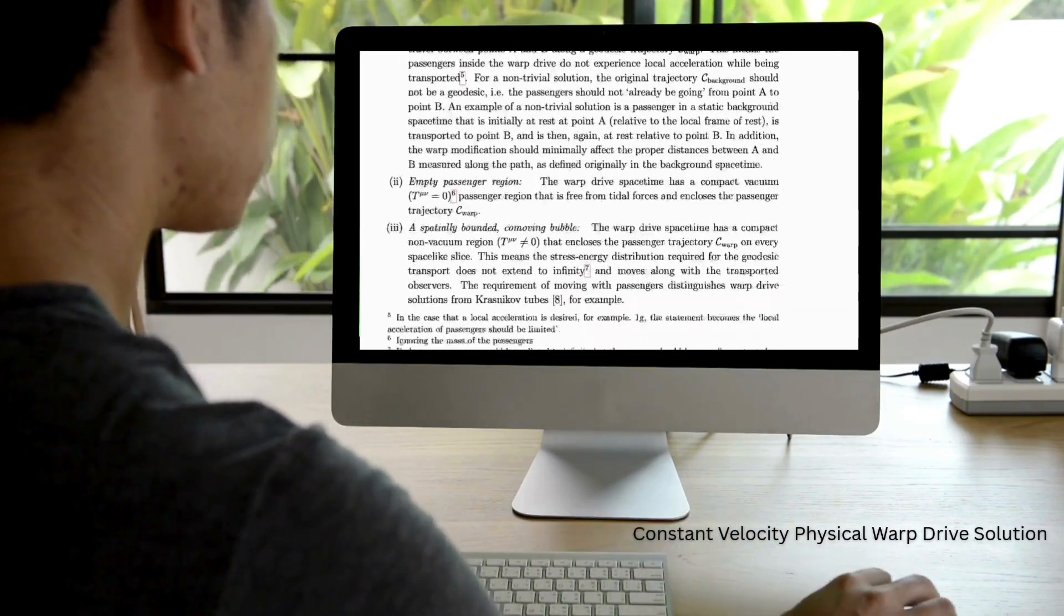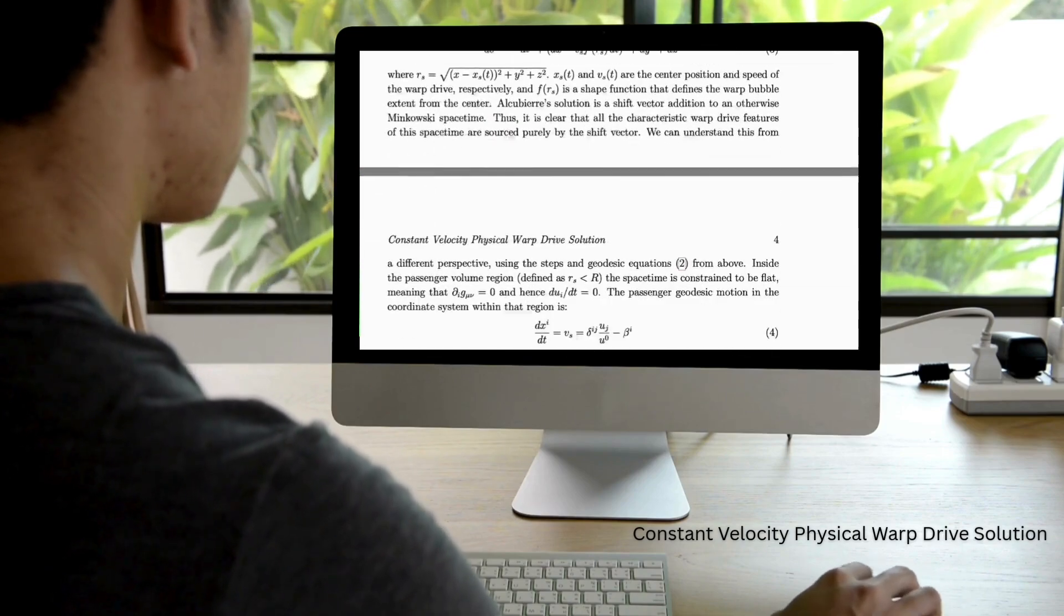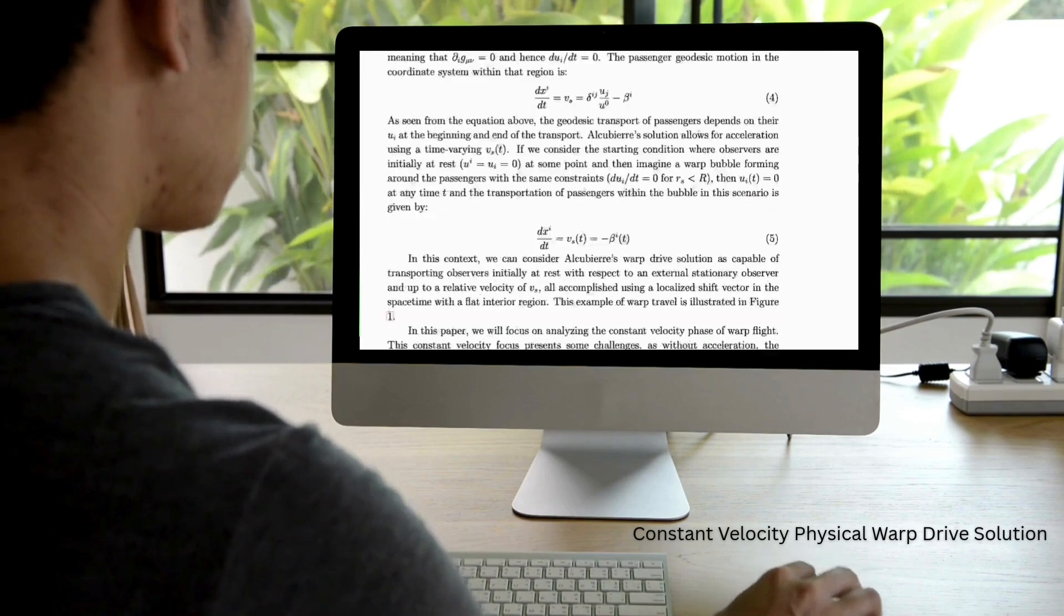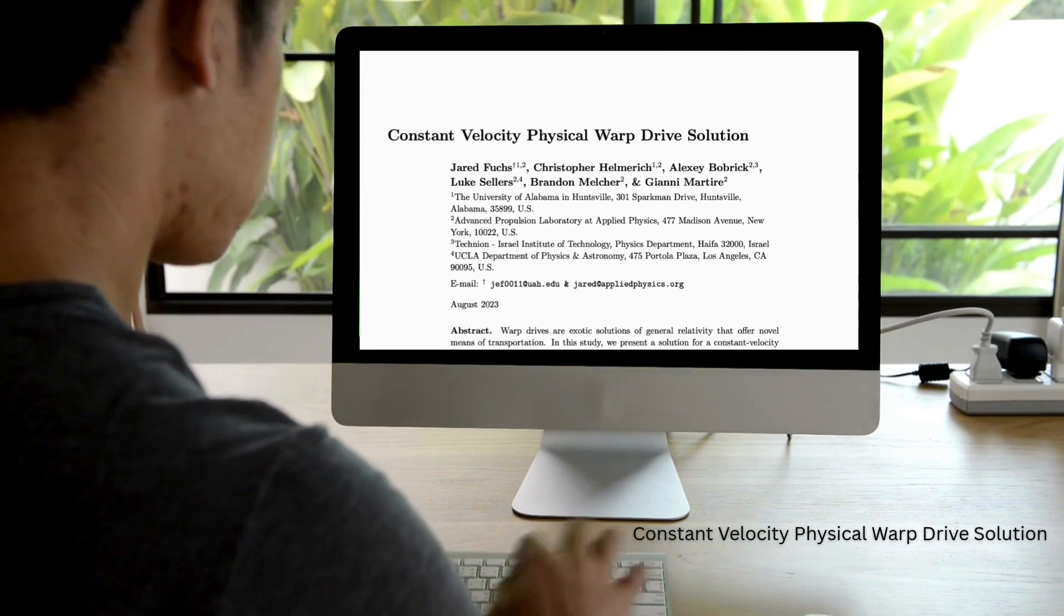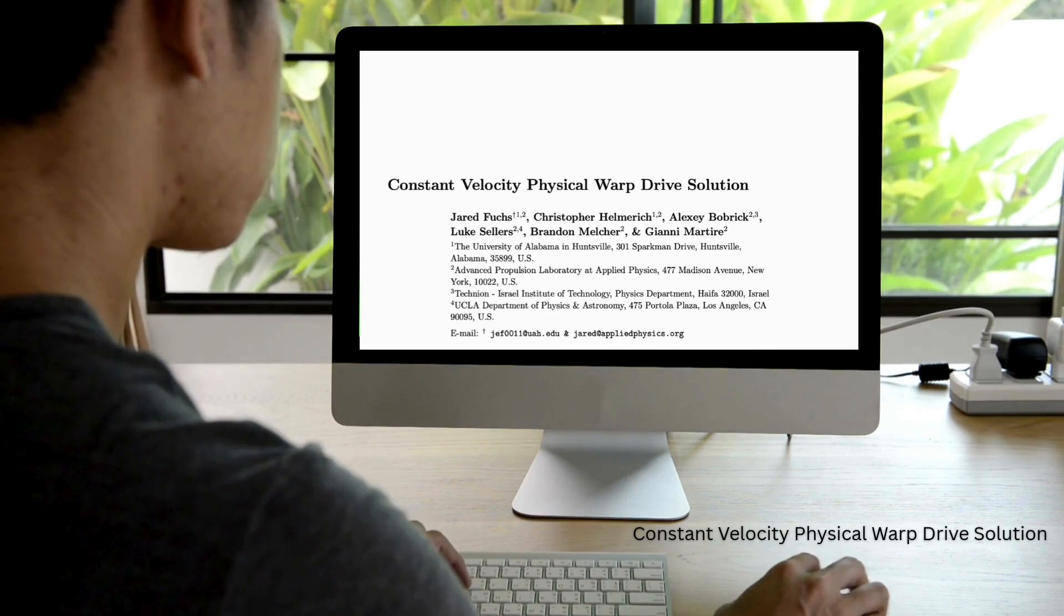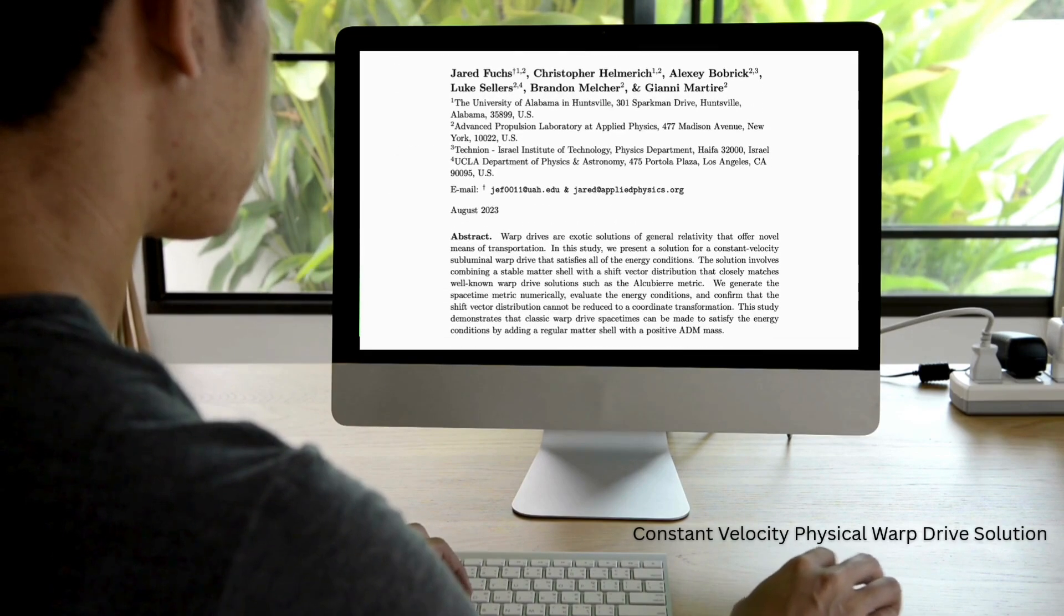Let's break it down. The team modeled a shell of matter surrounding the passenger area of the ship. Inside the shell, they introduced a shift vector, a concept from Alcubierre's original design, that causes the warp bubble to move.